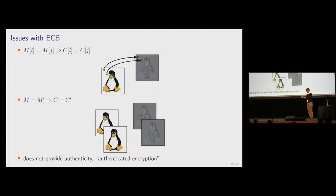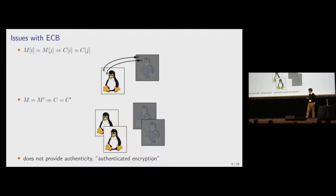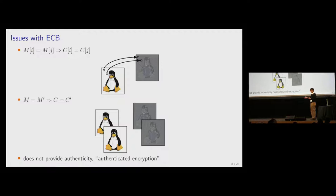Another issue is that if we encrypt the same message twice, we will have the same ciphertext twice. So if we encrypt this image today, we will see the same ciphertext tomorrow. A further issue is that ECB doesn't provide authenticity of data: if the ciphertext is manipulated, there is no way to detect it, and it is just decrypted into wrong plaintext. To securely encrypt and authenticate data, we need to use an authenticated encryption scheme.